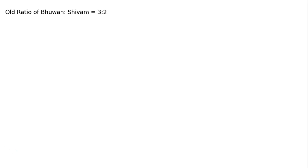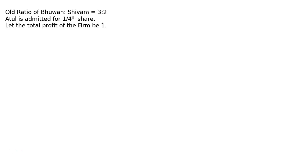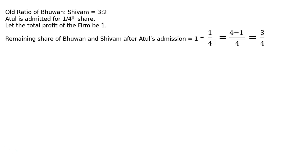Old ratio of Bhuvan to Sivam is equal to 3 to 2. Atul is admitted for one-fourth share. Let the total profit of the firm be 1. Remaining share of Bhuvan and Sivam after Atul's admission is equal to 1 minus 1/4, which gives 3/4.